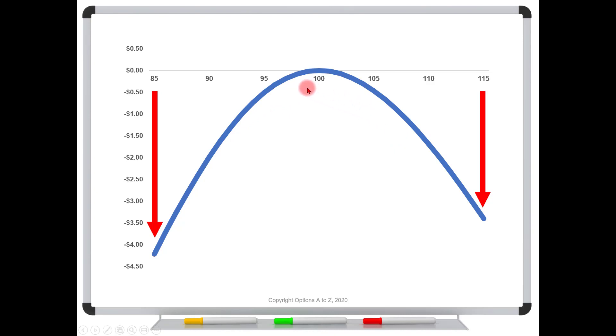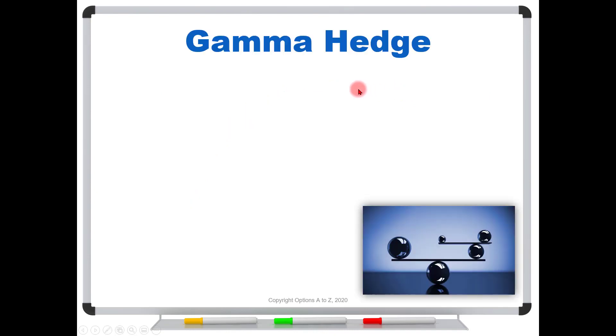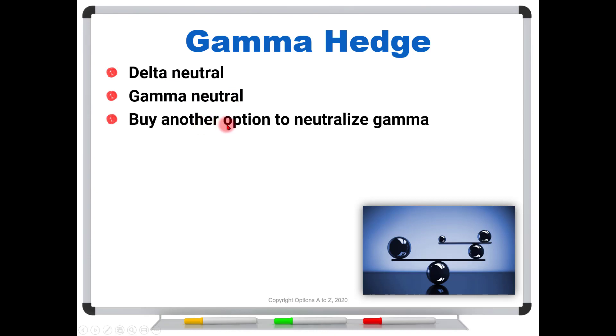So that becomes the problem with a delta hedge is that we've got gamma. And so now this is where we try to solve it with a gamma hedge. And what we're trying to do is to flatten out this blue curve, because if it's not quite so sharp of a turn like this, we're not going to start facing losses as quickly. So how do we create a gamma hedge? Well, to do it, we want to be delta neutral, but we're also going to be gamma neutral. And to do that, we have to buy another option to neutralize the gamma. Why? Because stock has no gamma. You can't use stock to do a gamma neutral strategy.